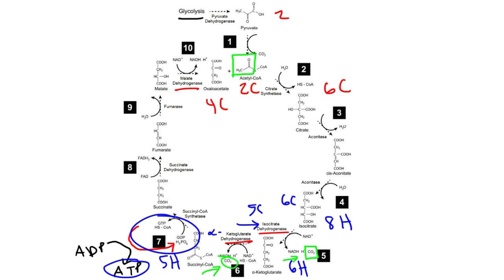This part is a cyclic process. We use up GDP to make GTP, and then GTP transfers the phosphate group to ADP to make ATP.